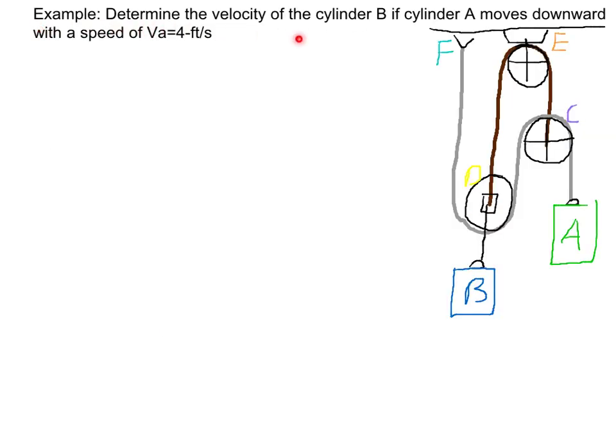Now here's our example. Determine the velocity of cylinder B if cylinder A moves down with the speed of V sub A equals four feet per second. Here's our pulley system with two different cords. The first thing we do is ID a fixed point, so we'll set our fixed point right there.